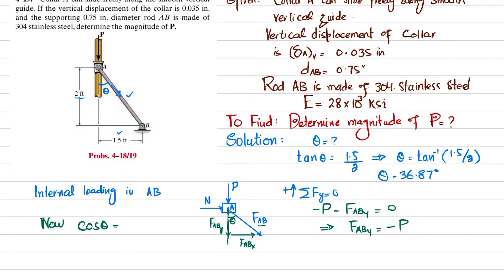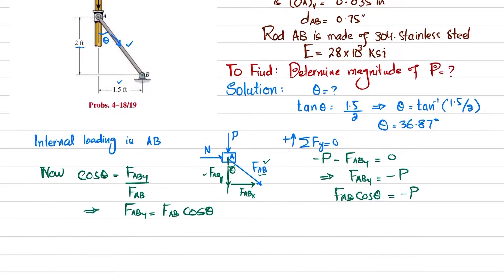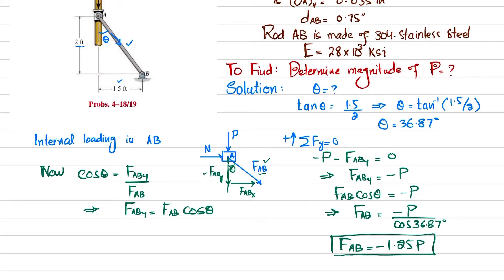Taking cosine of theta: cos(theta) equals F_AB_y divided by the hypotenuse F_AB. So F_AB_y equals F_AB times cos(theta). Substituting: F_AB times cos(theta) equals minus P. From here, F_AB equals minus P divided by cos(36.87°), which gives F_AB equal to minus 1.25 times P.